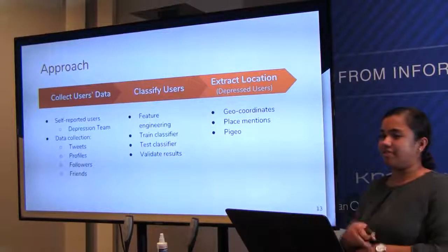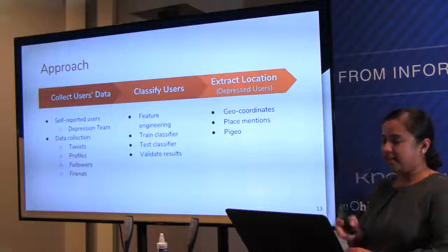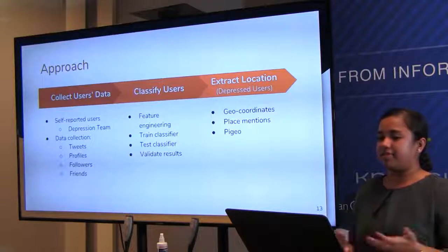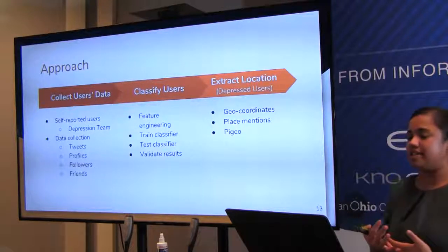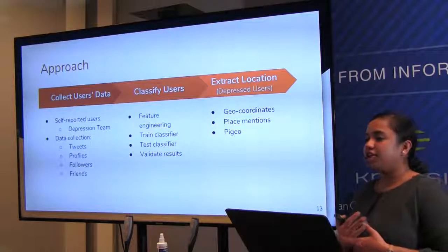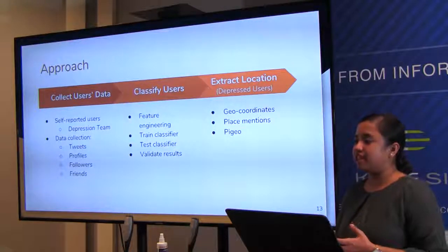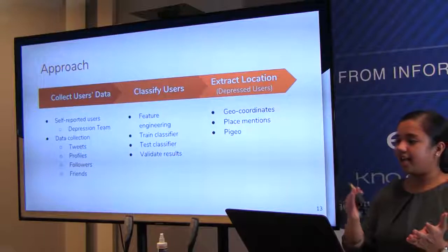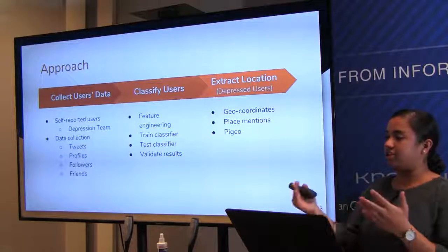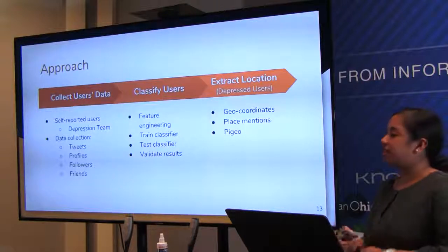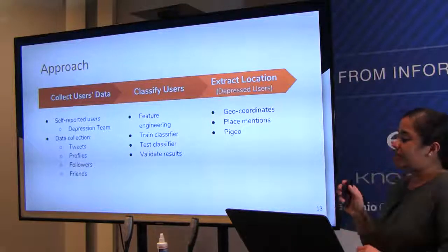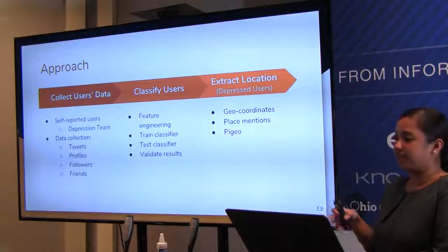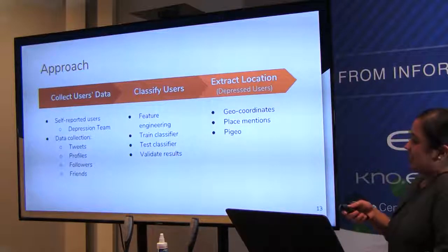Training the classifier involves human annotations — having human judges look at a Twitter profile and determine if the user is depressed. The metric used is PHQ-9, a questionnaire used by clinicians to determine the severity of depression. Human judges are given the PHQ-9 questionnaire and analyze each profile to determine which depression symptoms they show, if any. PGO is a third-party tool that determines a user's location based on their tweet content.